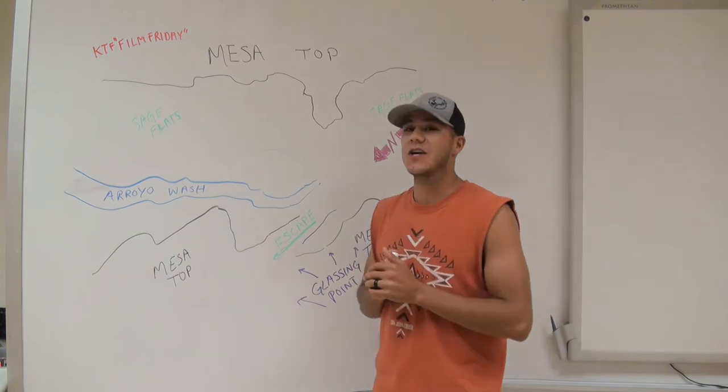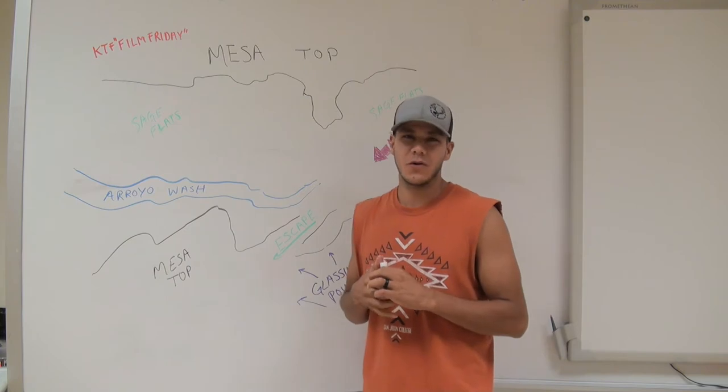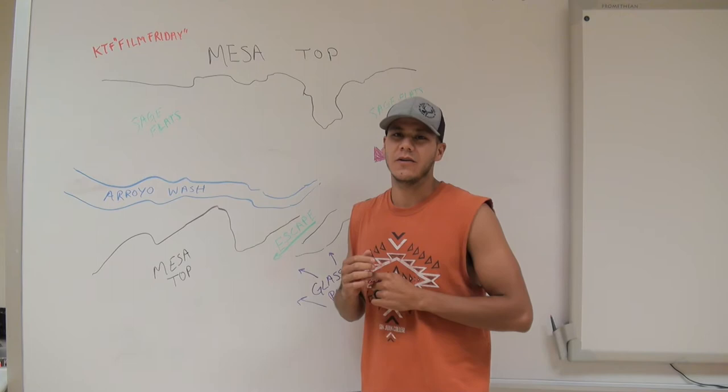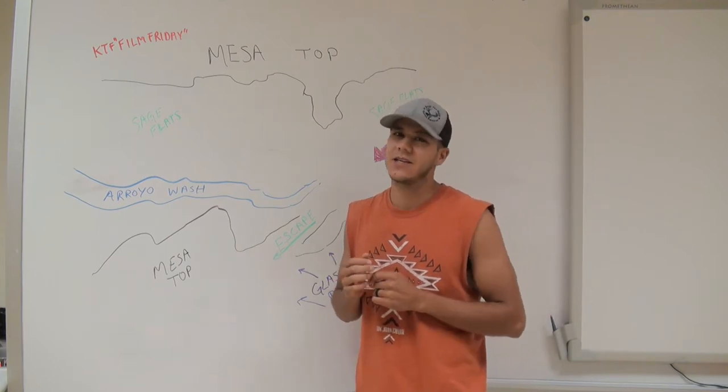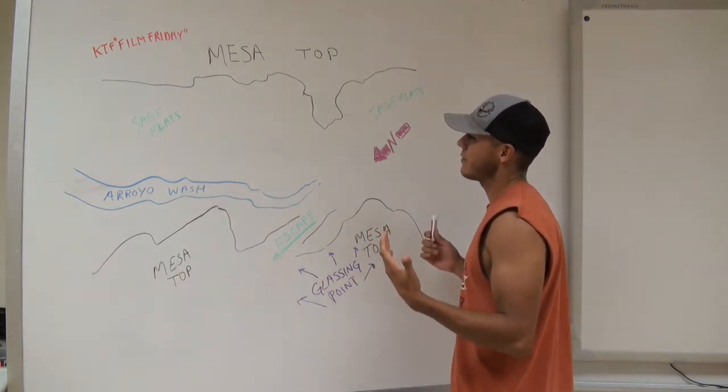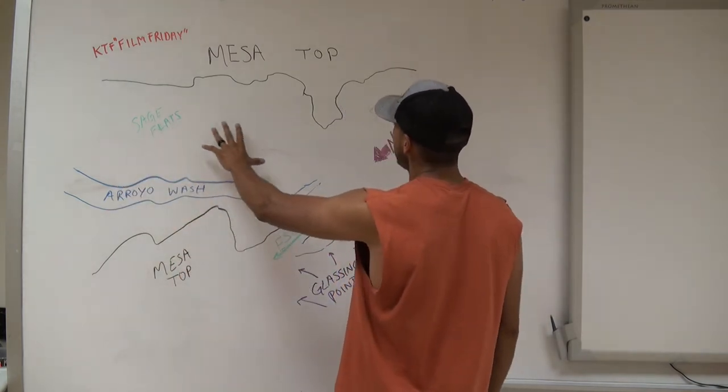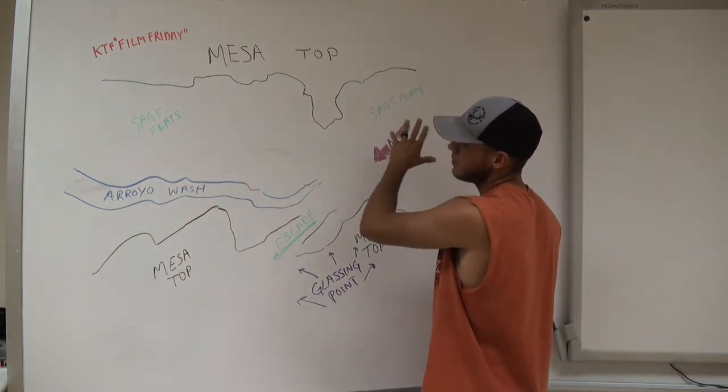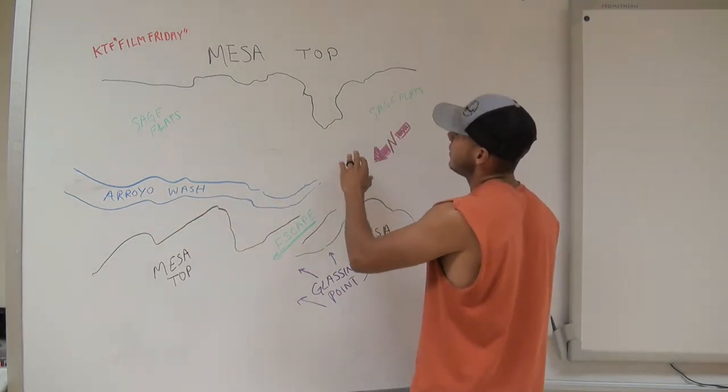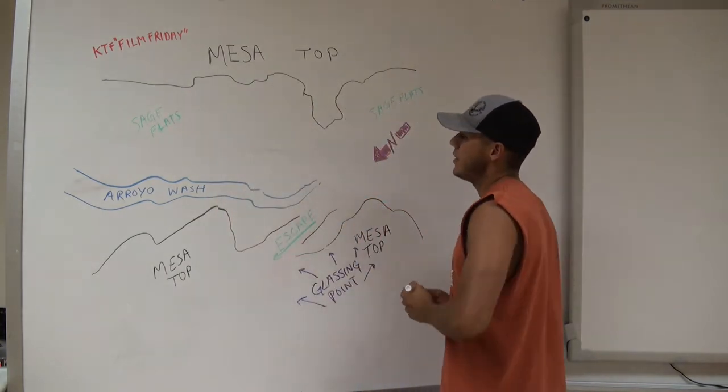First things first: this hunt is a blade archery deer hunt, northern New Mexico in January, with about a foot of snow on the ground. Let's get into the hunt here. As always, take a look at the topography. We got our glassing points, mesa tops here and here. We got big sage flats down here in the bottom, a wash here that kind of peters out right here, and another mesa top on this side.